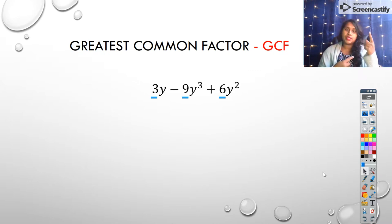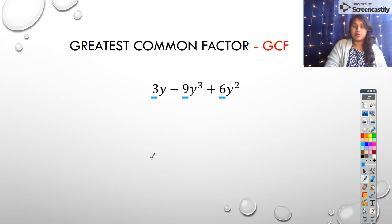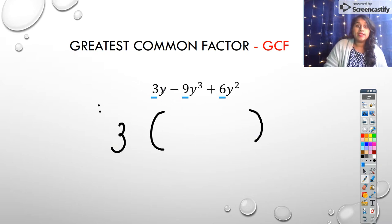So I go ahead and factor it out. I put my parentheses down. And I ask myself, what did I remove? Well, I removed a 3 from every term and a y from every term. What's left here if I remove 3? One. What's left if I remove y? One. So that's really just 1. What's left here if I remove a y? Well, y² would be left. What's left here if I remove 3? -3 would be left.